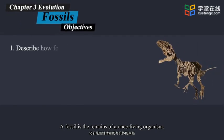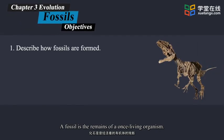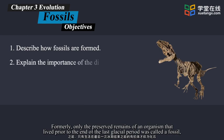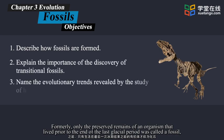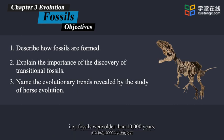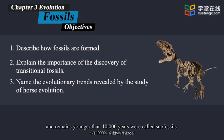A fossil is the remains of a once-living organism. Formerly, only the preserved remains of an organism that lived prior to the end of the last glacial period was called a fossil — i.e., fossils were older than 10,000 years, and remains younger than 10,000 years were called sub-fossils.